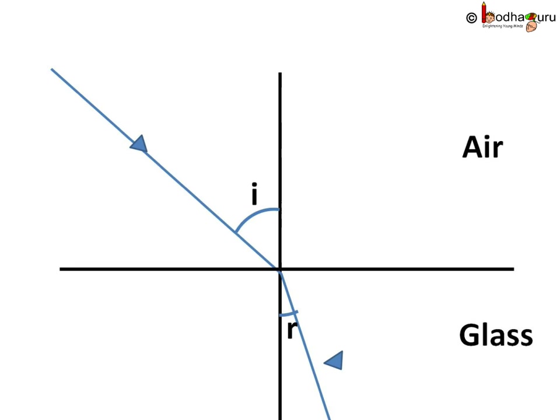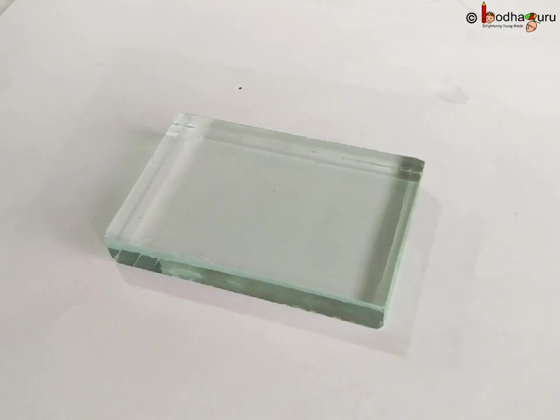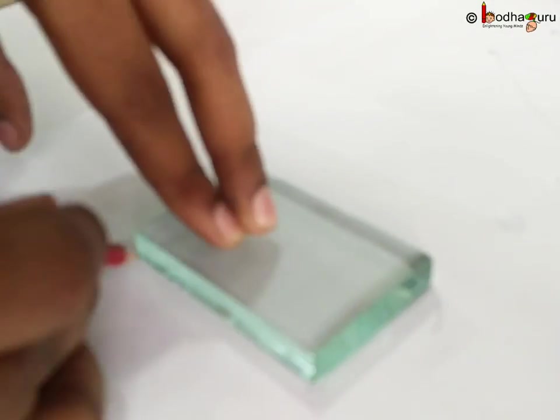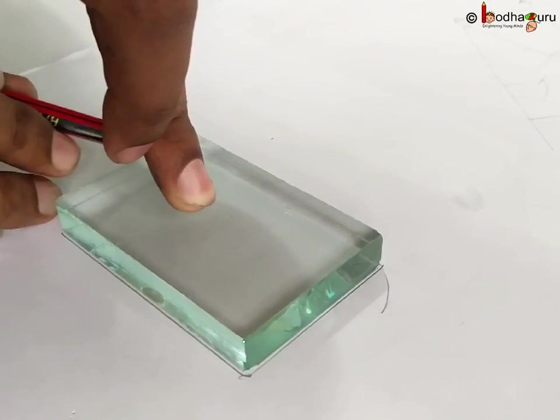We take a glass slab and a board, then we put the glass slab in the middle and draw its boundaries on the board.